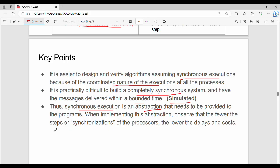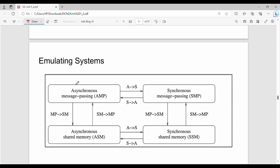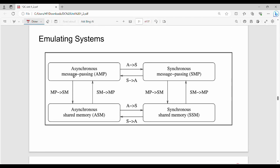We need to understand the diagram. First, we need two types: asynchronous and synchronous. Then for communication type, we have message passing and shared memory.